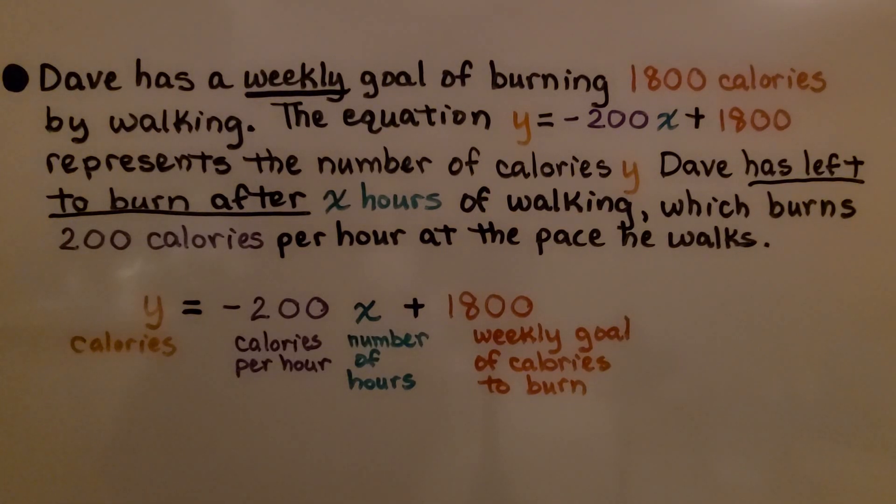Dave has a weekly goal of burning 1,800 calories by walking. The equation y = -200x + 1,800 represents the number of calories y Dave has left to burn after x hours of walking, which burns 200 calories per hour at the pace he walks.